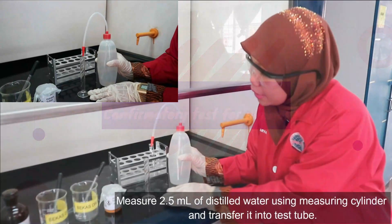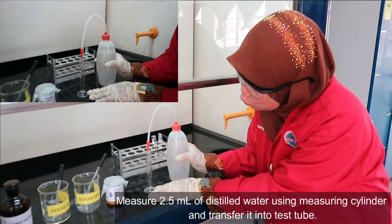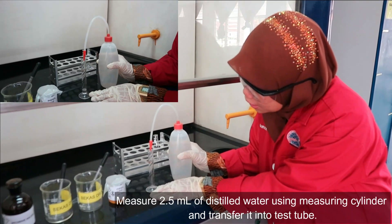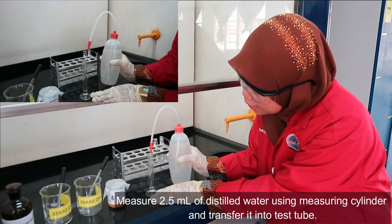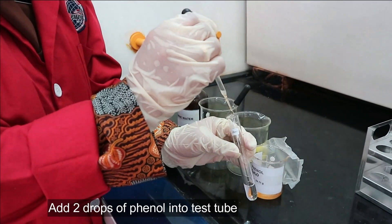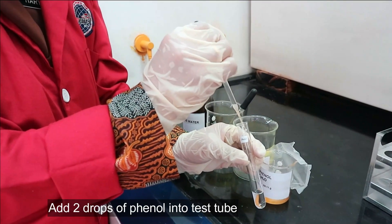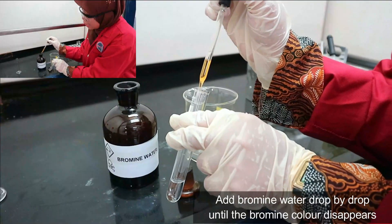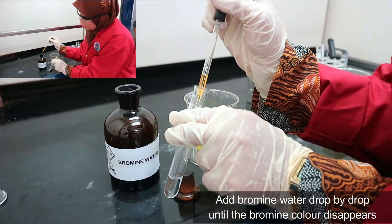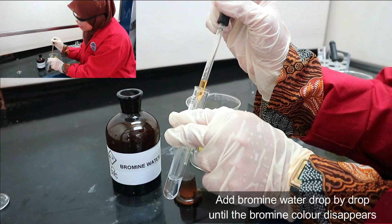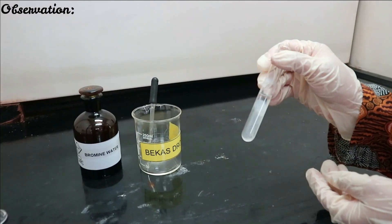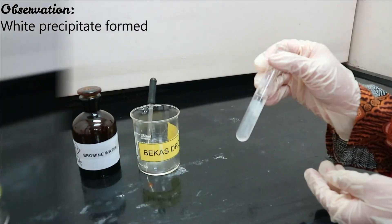Add 2 ml of distilled water into the measuring cylinder and transfer it into the test tube. Add bromine water drop by drop until the color of bromine disappears. You will get a white precipitate as the observation.